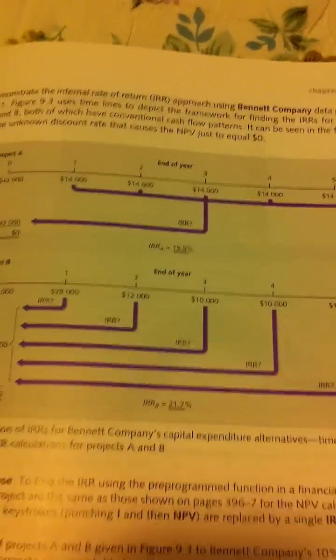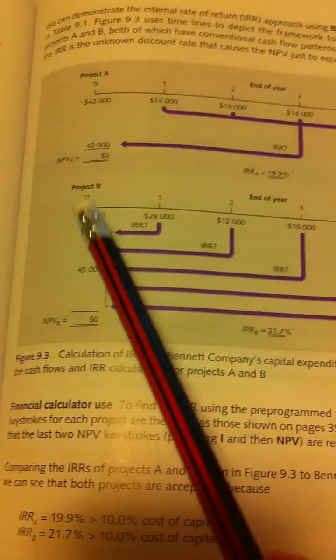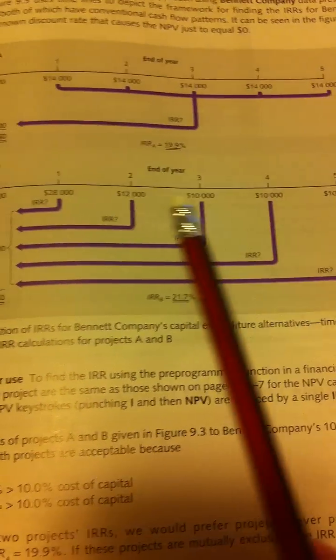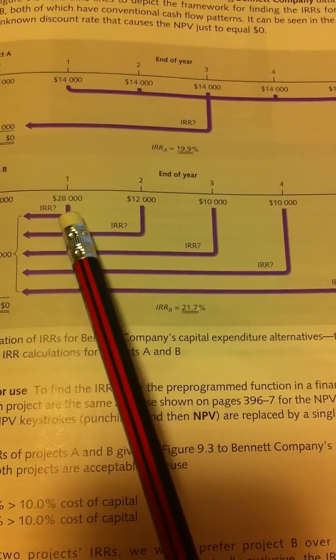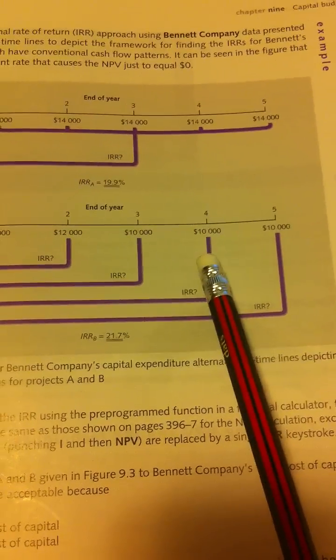Hi everyone, this time I'm going to show you how we calculate IRR with the uneven cash flow project. This is project B. You can see project B has a timeline from year 1 to year 5 with different amounts: year 1 is $20,000, year 2 is $12,000, and years 3 through 5 are $10,000 each.